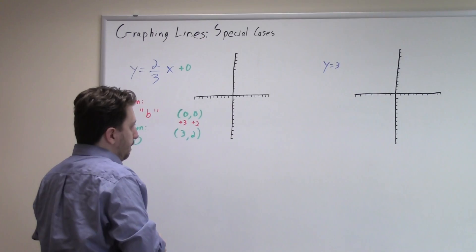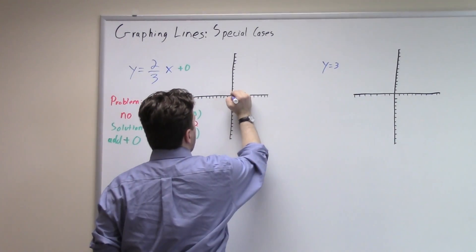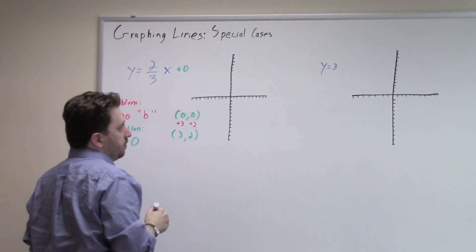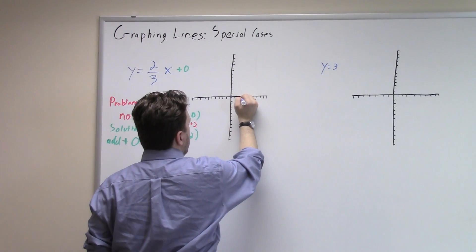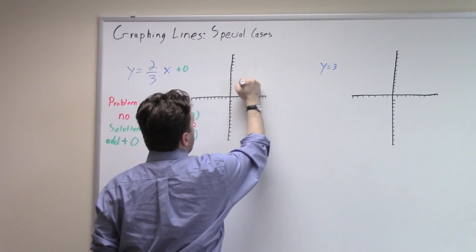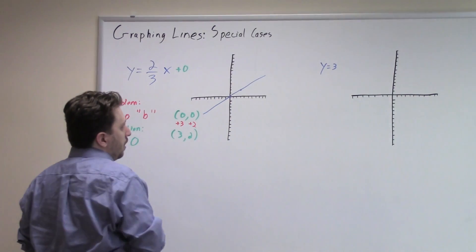And then we graph it. Because our y-intercept is at zero, zero, we're going to be starting at the origin, which is the point zero, zero. Then we're going to go over three and up two. And that's going to be the graph of our line.